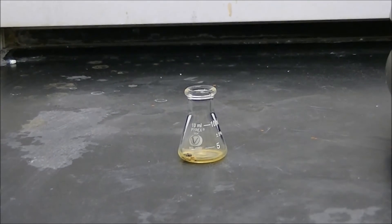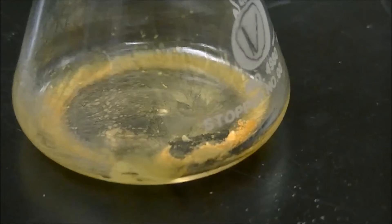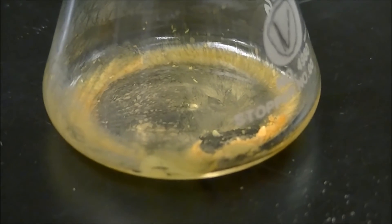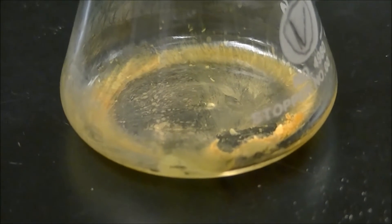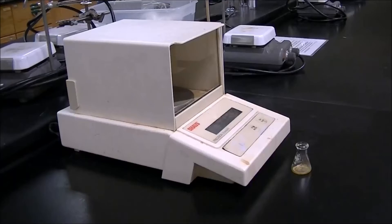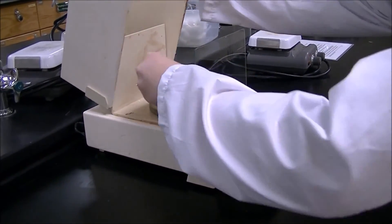Once it's done boiling, remove the flask from the hot plate and allow it to cool to room temperature. Here you can see that once the 9-fluorenone solution has gotten to room temperature, it becomes a solid. Weigh and record the mass of the 9-fluorenone and the Erlenmeyer flask.